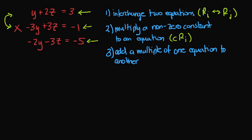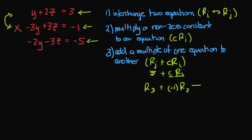The third rule is to add a multiple of one equation to another. The notation is rj plus some constant times ri. This means I take a row and add to it some constant c multiplied by another row. For example, I could take equation three and add to it equation two multiplied by negative one to get my new row three. Importantly, only equation three is changed — equation two is used but not modified in the system.